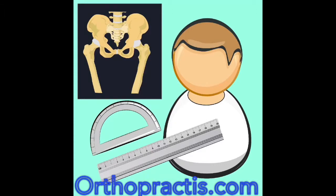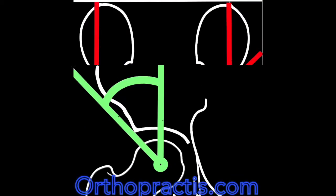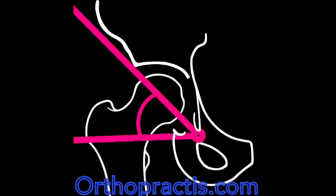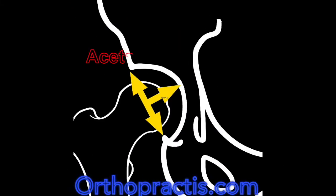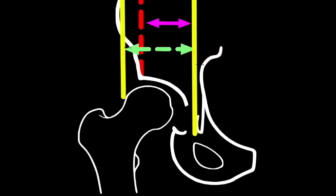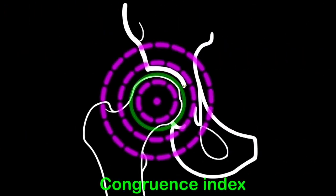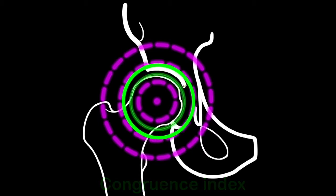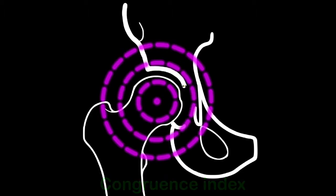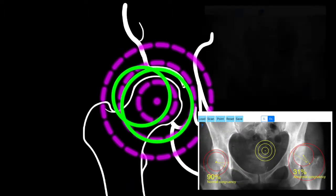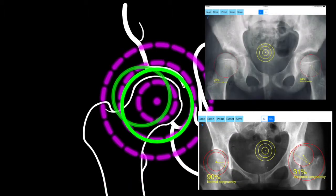Various radiologic indexes have been used to evaluate hip dysplasia, like acetabular index, center edge, sharp angle, reamer index, acetabular depth ratio, and congruity index. Congruence is present when the center of the femoral head and that of the acetabulum coincide. Lack of hip congruence between the femoral head and the acetabulum leads to increased local contact stresses, degeneration, and consequently to premature arthritis. The app calculates the congruence index.